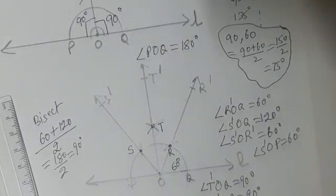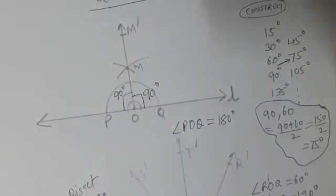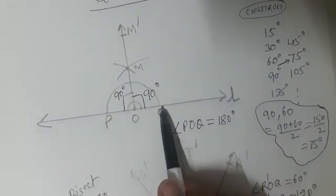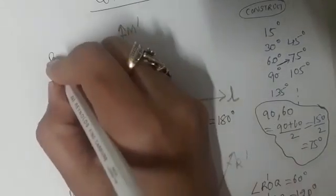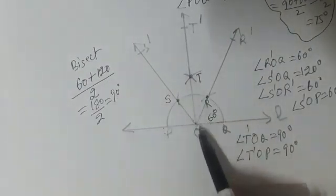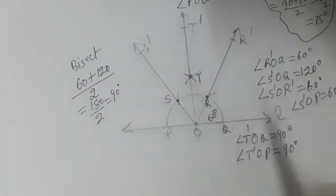So there are two methods of constructing an angle of 90°. First: bisect 180° to get 90°. Second: construct 60° and 120°, then bisect them — (60 + 120) ÷ 2 = 90°. Both methods give us 90°.